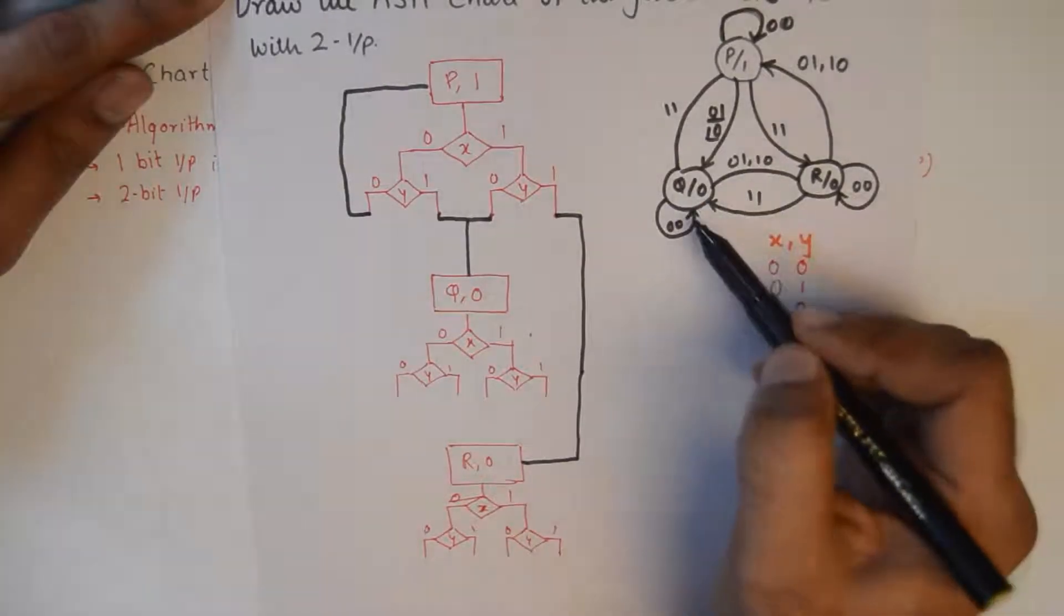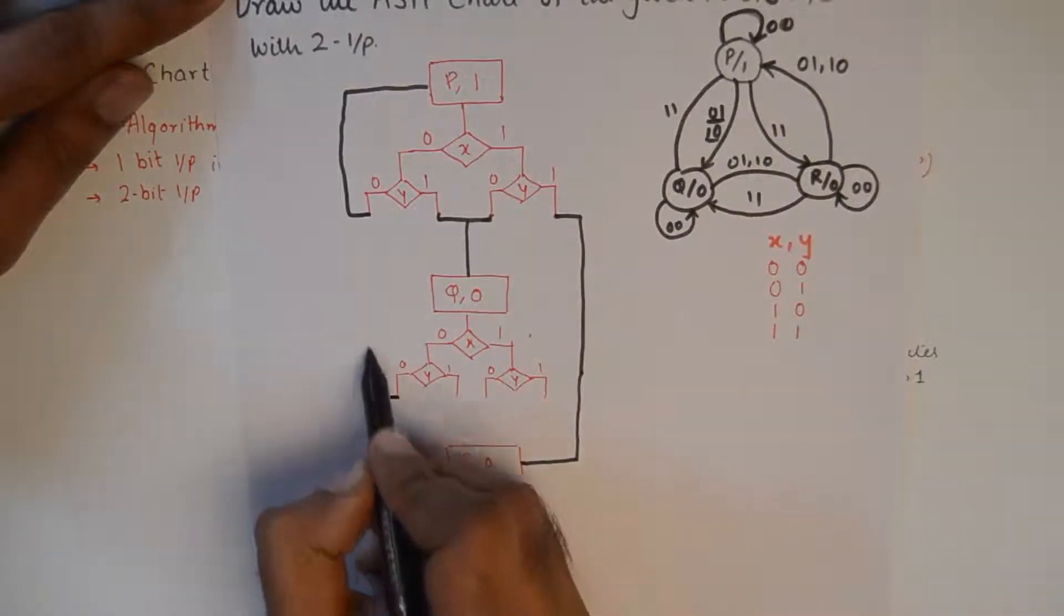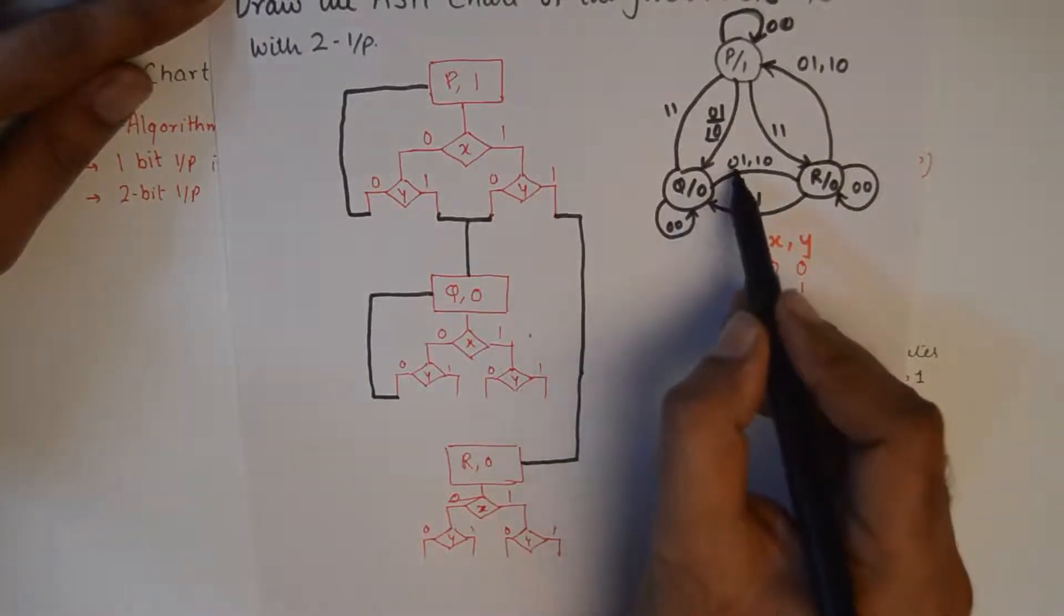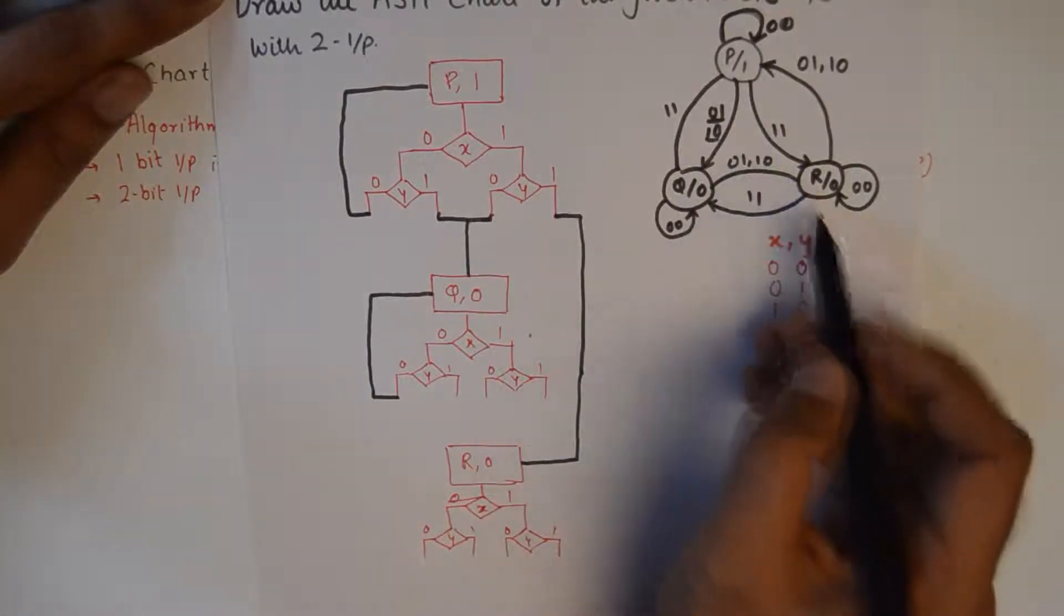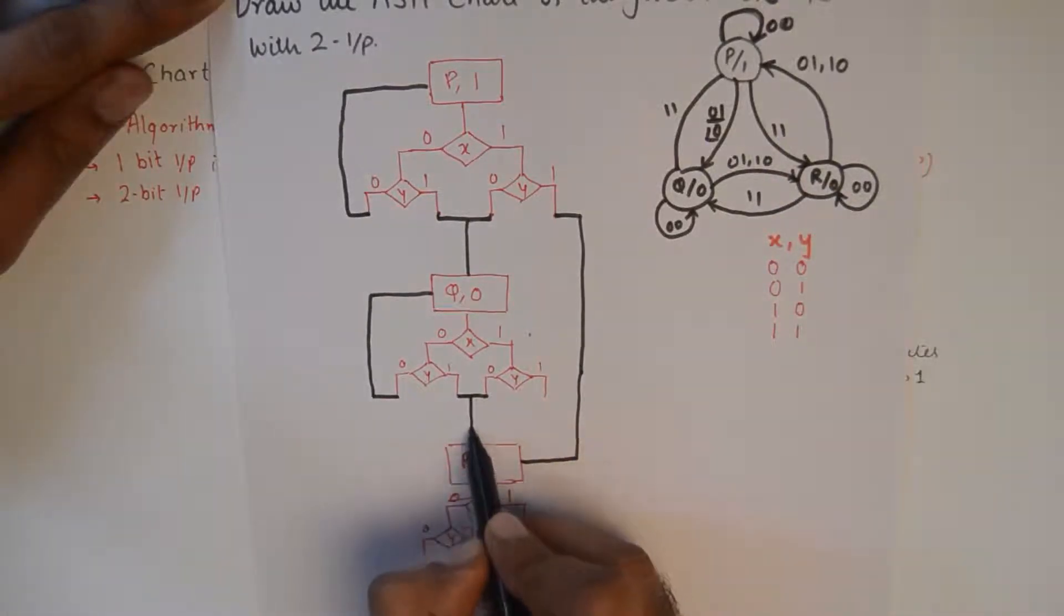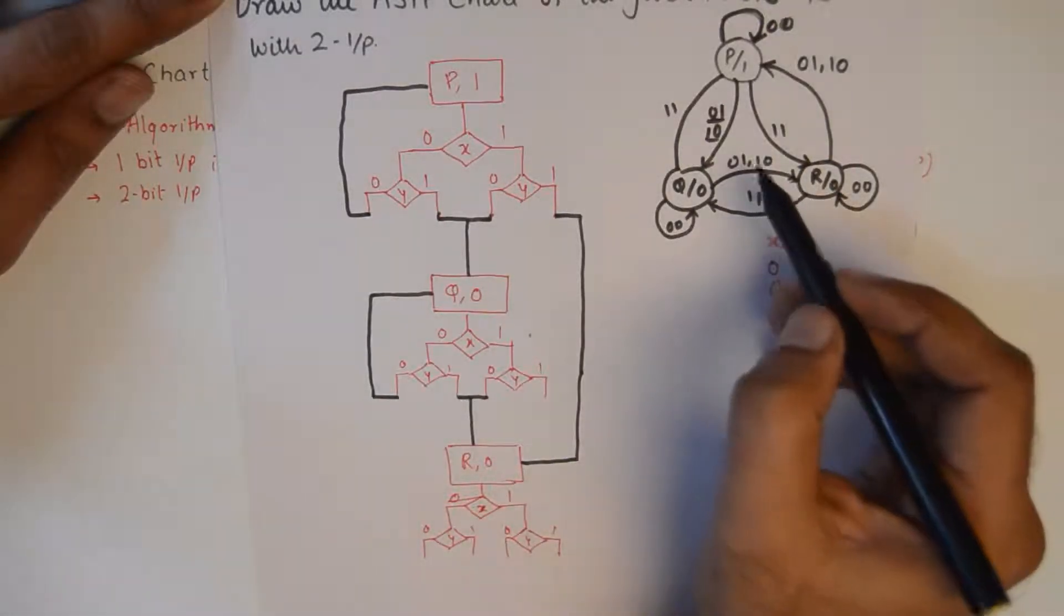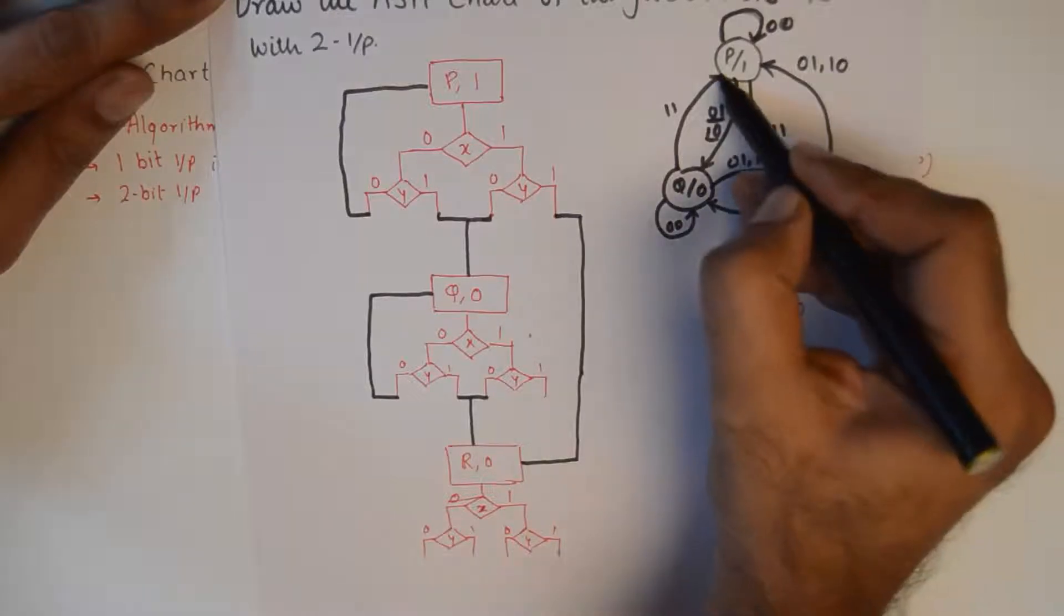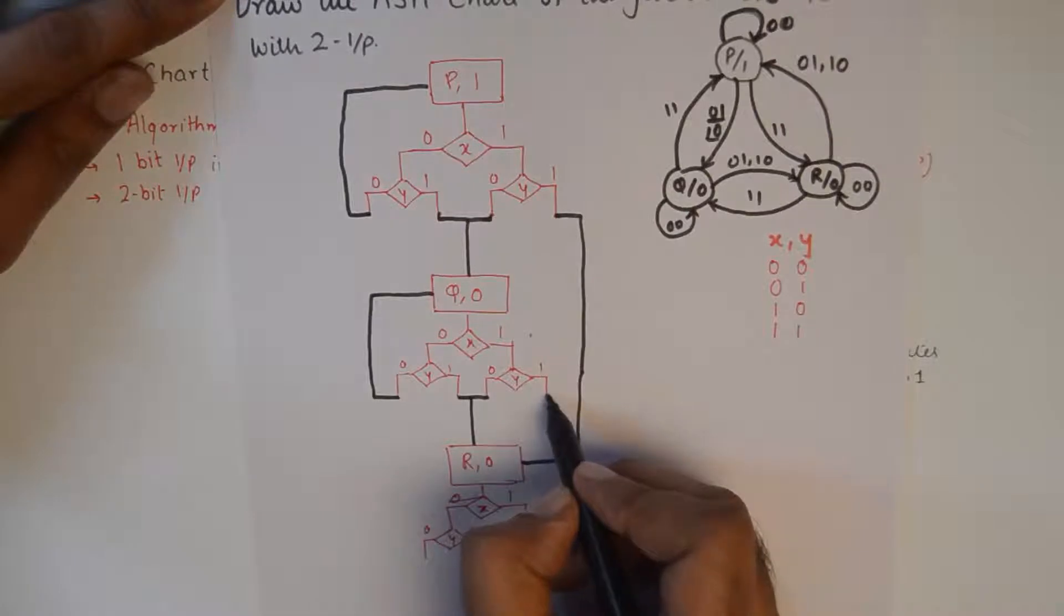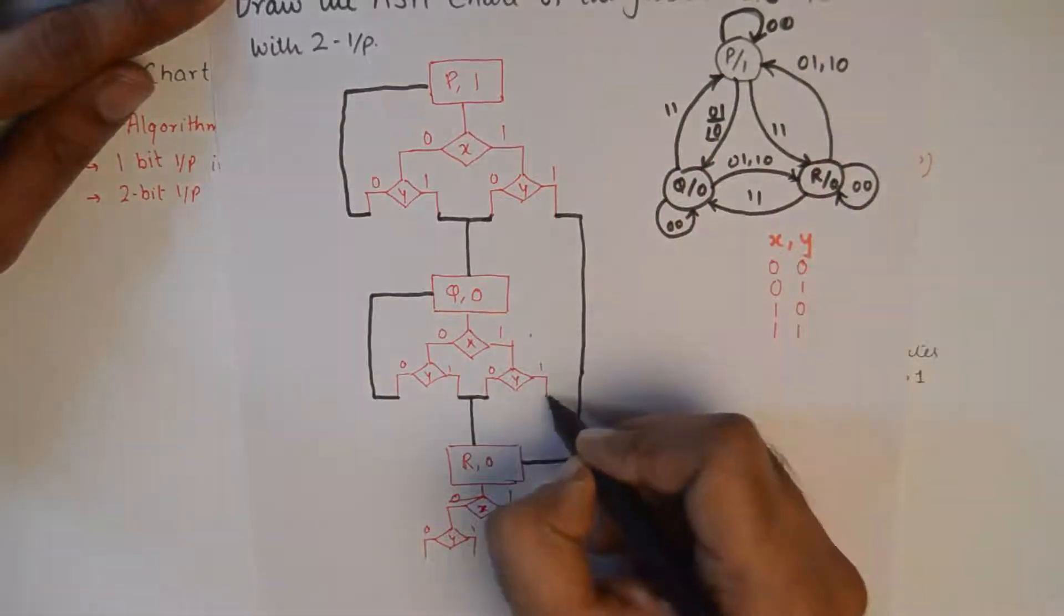Now let's see Q. While at Q, if I am at 00 I go back to Q, easy. And at Q if I see a 01 or a 10 as input, I go to R, so I again combine these two and go to R. And when I have a 11 at Q, I go to P, so 11 will take me to P from Q when the input is 11.